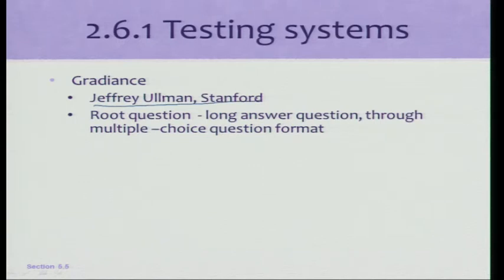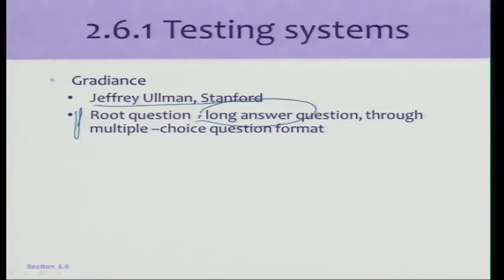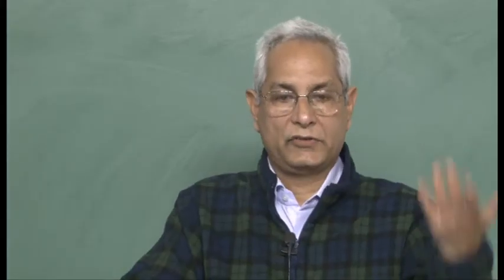There is some handle on this. An example is a system built by Professor Jeffrey Ullman from Stanford — he conceptualized something called a root question. If I am looking for a long answer and need to correct it using a machine, I should be able to pose that question requiring a long answer as a series of short answer or multiple choice questions. If the student manages to navigate them successfully, we could certify that he knows enough to have answered an equivalent long answer question. That is the hypothesis — they have built a system and things like this will give a handle on how to scale up long answer questions to large numbers.